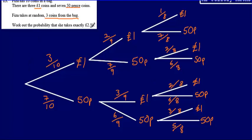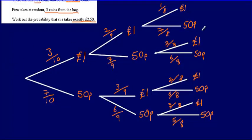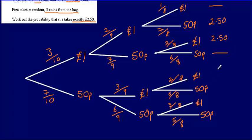We're asked to work out the probability that she takes exactly £2.50, so we need the scenarios where three coins add up to £2.50. That would be: a £1, a £1, and a 50p — which is £2.50. A £1, a 50p, and a 50p gives £2, so we're not interested in that. A 50p, a £1, and a £1 comes to £2.50. A 50p, a £1, and a 50p comes to £2, so not interested. And 50p, 50p, a £1 gives £2, and three 50p's gives £1.50 — not interested in those either.